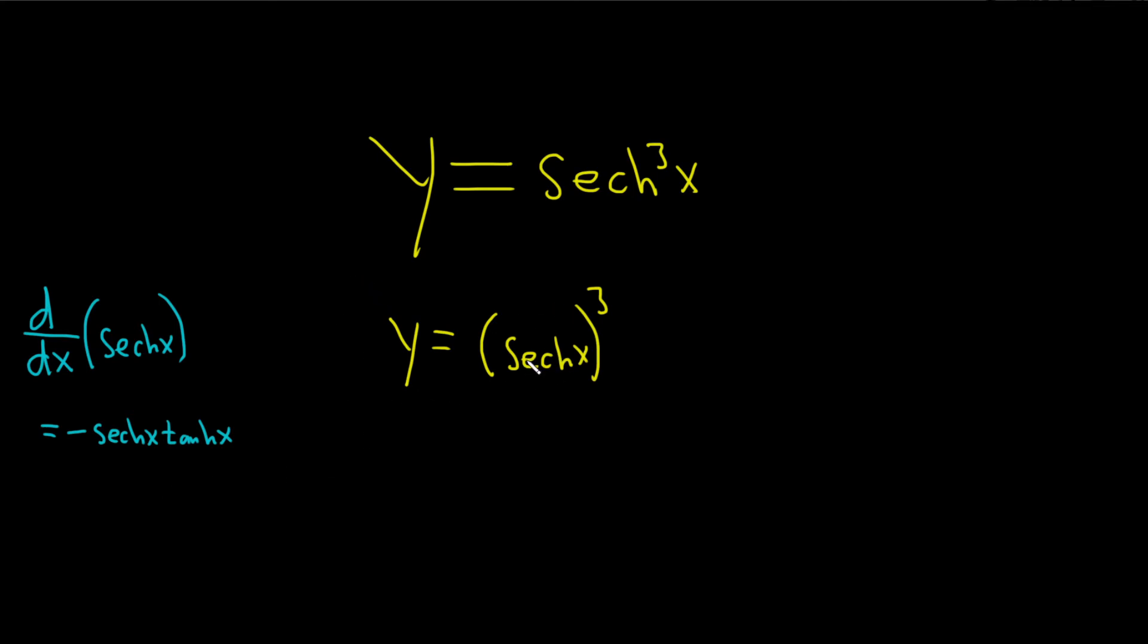So here what we're going to do is use the chain rule, right? We have this function to a power. So dy dx is equal to, so we'll leave the inside piece untouched. It's the hyperbolic secant. We'll bring down the 3. So it's 3 parentheses hyperbolic secant of x.